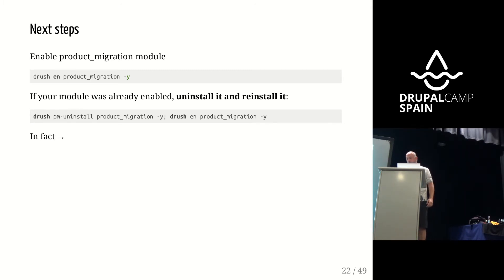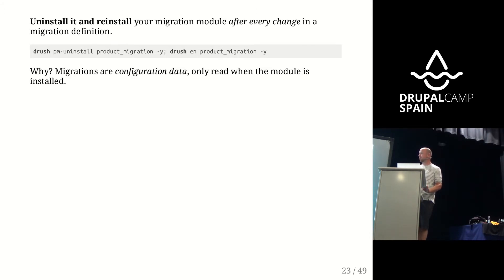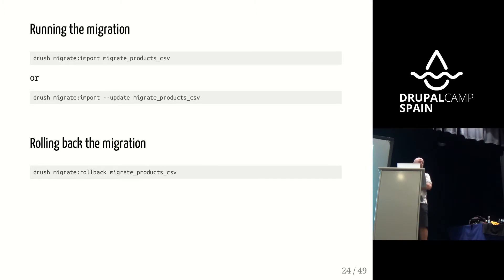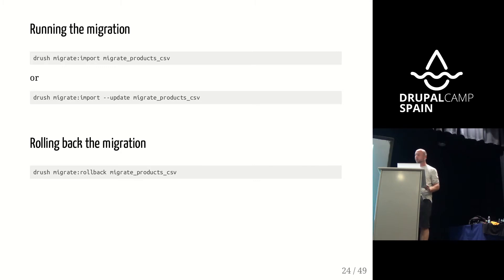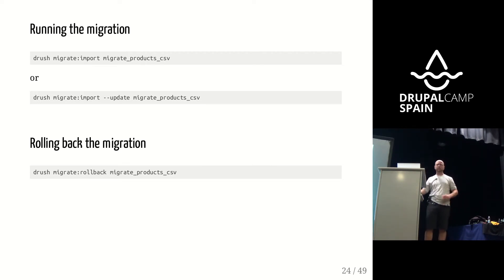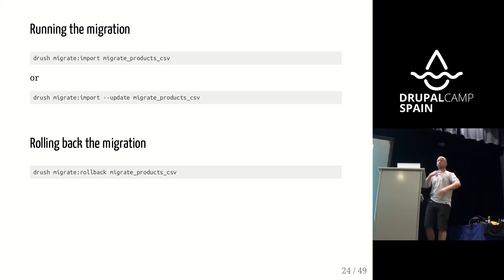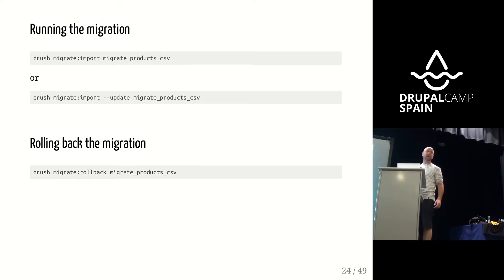Once we have our migration definition, we basically want to do two things: run it, and roll it back. Drush migrate import, then the name of your migration definition, and Drupal will run the import. If you want to roll back — and that's a really cool thing about the migration framework — you test your migrations, something goes wrong because something always goes wrong, some field mapping isn't right, something else went wrong. You want to roll back, meaning remove everything you just imported, change your configuration, and then run it again. Keep doing that until your migration is good. Drush migrate rollback does exactly this.